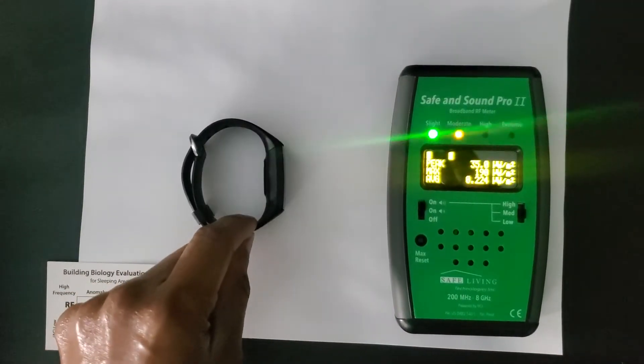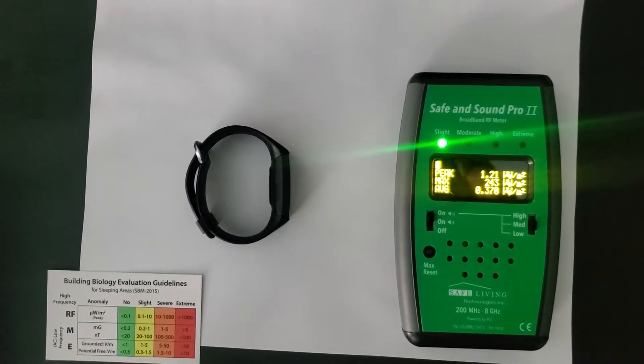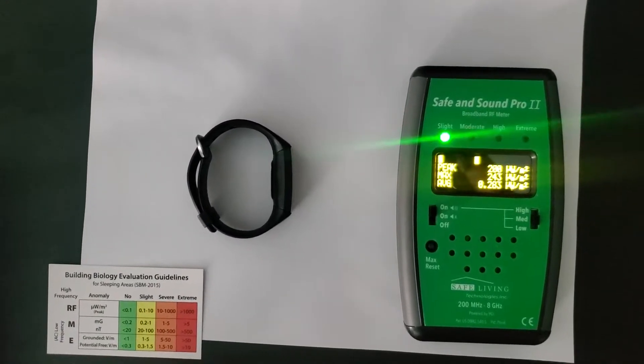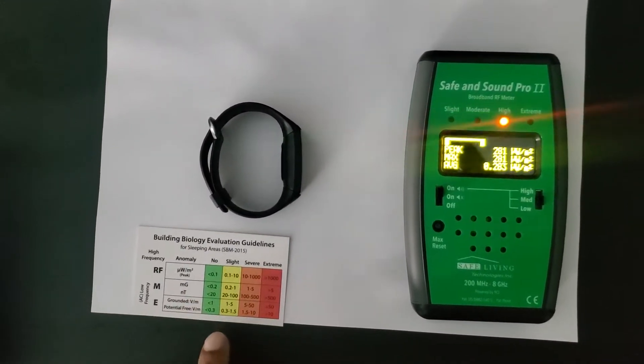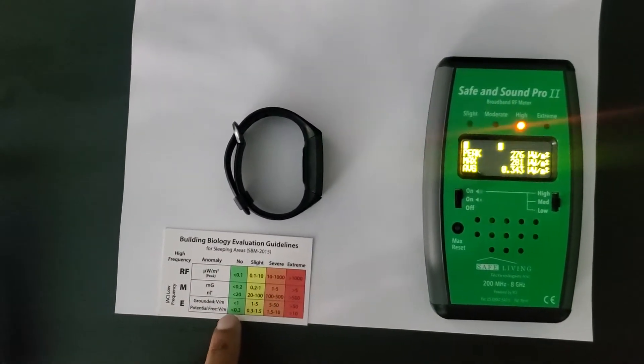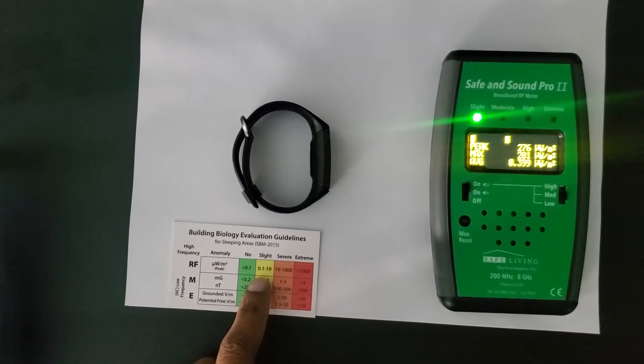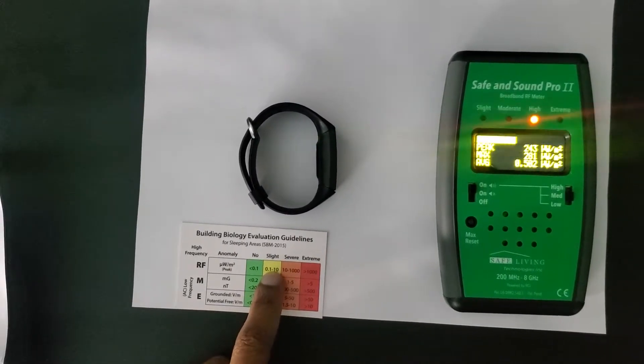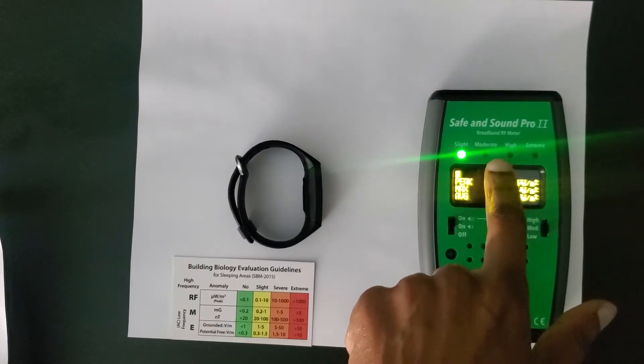Let's move it a little closer to get a higher reading. And you can see that the building biology evaluation guidelines is you want to have microwatts per meter square below 10. That would be the yellow light.